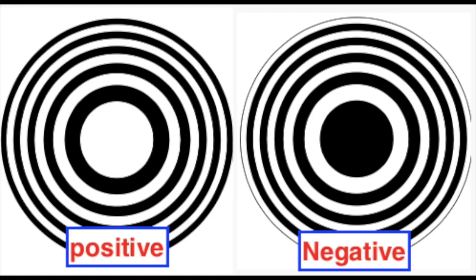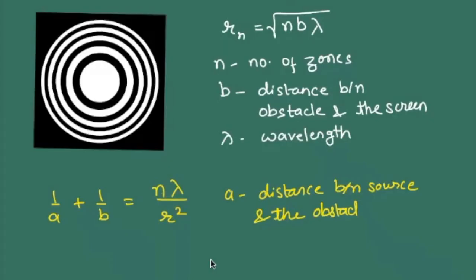Which kind of plate is better for us? We know from zone theory that the first zone has maximum impact on creating intensity of light. Therefore, this kind of plate is called a positive plate. If I reverse this, that's called a negative plate.